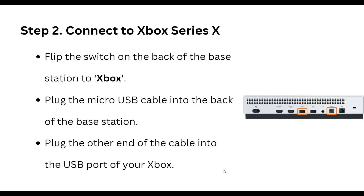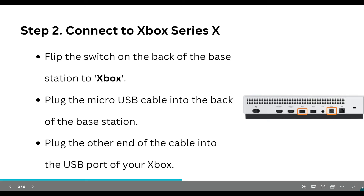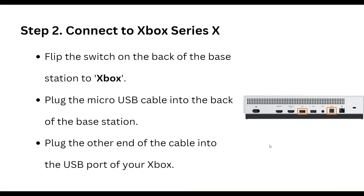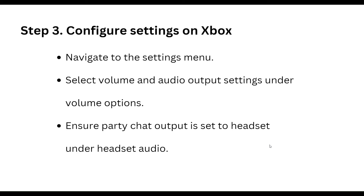Flip the switch on the back of the base station to Xbox. Plug the micro USB cable into the back of the base station, and plug the other end of the cable into the USB port of your Xbox.